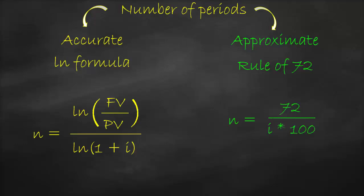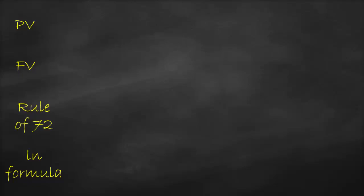For the Rule of 72, n equals 72 divided by the interest rate without the percentage. To use the Rule of 72, there is one main condition: the future value must be double the present value. If the future value is not double the present value, we cannot use Rule of 72. Remember, we can always use the LN formula, but for Rule of 72, the future value must be double the present value.